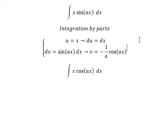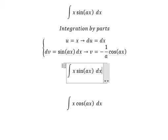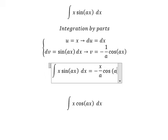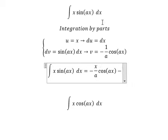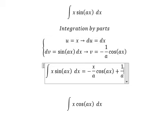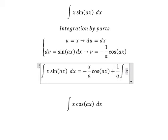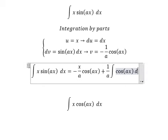So we have u multiplied by v minus the integral of v multiplied by du. Negative and negative gives us positive. So we have the integration of cosine ax dx.